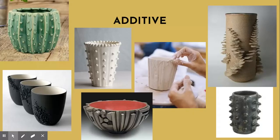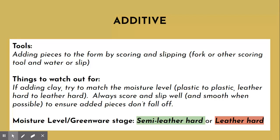The next technique is the additive technique. There are a lot of possibilities using an additive technique, but it simply means adding clay to the surface by way of scoring and slipping. The only tools you would really need are anything involved with scoring and slipping — so a fork or needle tool and water or slip. Of course you can create anything to add to the surface, so you may need other tools to accomplish those additional pieces.